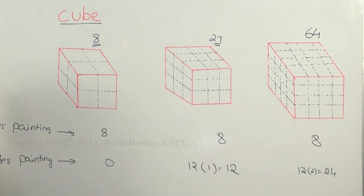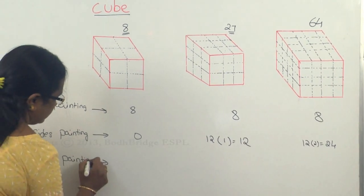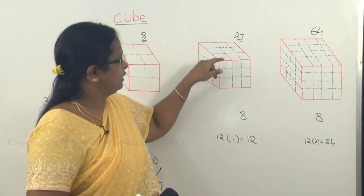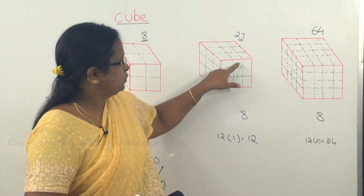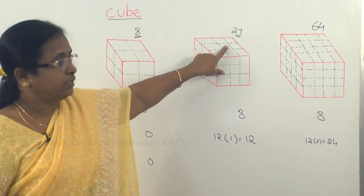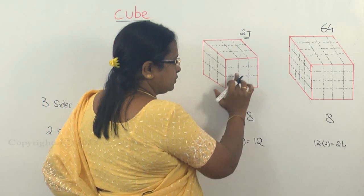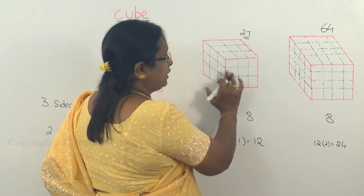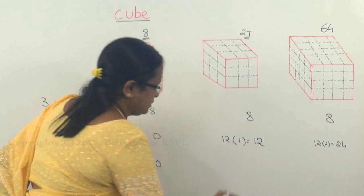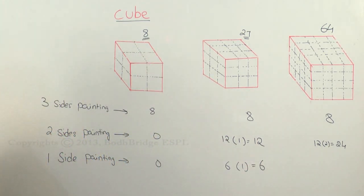Now for one-sided painting — one-sided painting comes only in the face. The edges and corners are already accounted for. In the 27-cube case, in each face only the middle one cube has only one face exposed with the remaining all sides inside. So only one cube in a face will be one-sided painted. There are totally six faces, and for each face you are going to have only one. So there will be totally six of the smaller cubes which are one-sided painted.